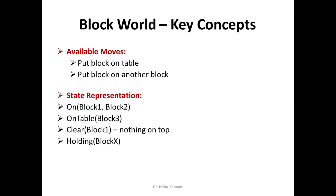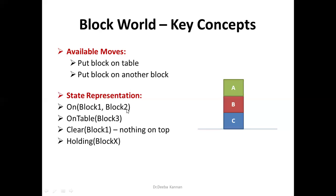If you look at the table, there is a block on the table, or a block on another block. There is a block below. If you look at the arm head, it will be clear. How do you look at the top block? Let me look at the example. Let me look at the function. B is on C — this is how the first block is on the second block.